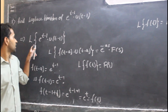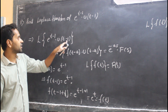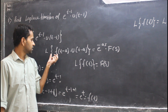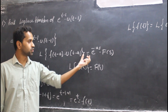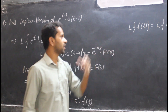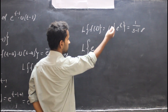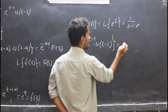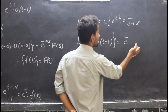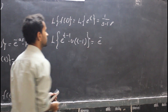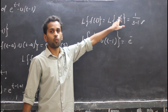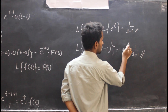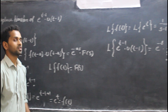Coming back to the question, L{e^(t−1)·u(t − 1)} = e^(−as)·F(s). My a is 1, so this equals e^(−s) times 1/(s − 1). Therefore, the final answer is e^(−s)/(s − 1).